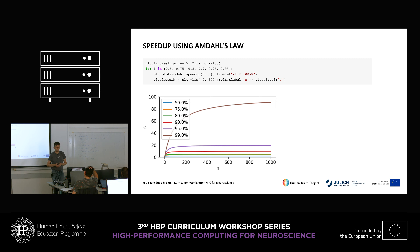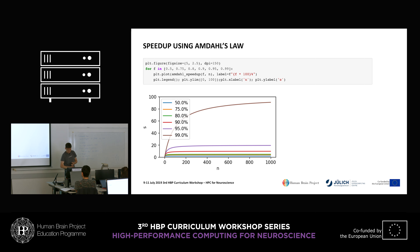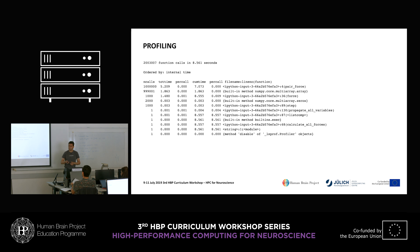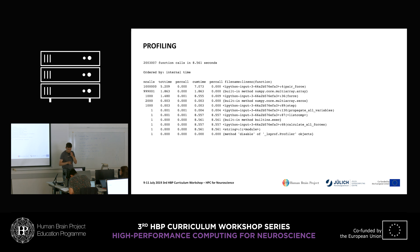But how do I know which part of my code takes how much time? That's where profiling comes in. A profiler shows, for example, how much time your program spends in which function, or possibly on which line of code, or even which computer assembler instruction. Here we'll just look at function-level profiling.